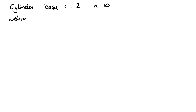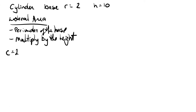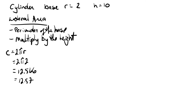Let's start with the lateral area. The first thing we need to do is find the perimeter of the base, then multiply that by the height. Remember, with the perimeter of a circle we're really talking about the circumference. The circumference is equal to two pi times the radius. Since the radius is two, that's two pi times two, which gives us twelve point five seven.